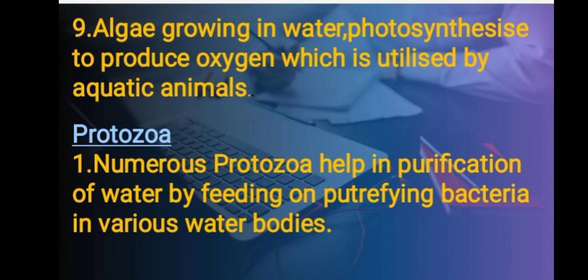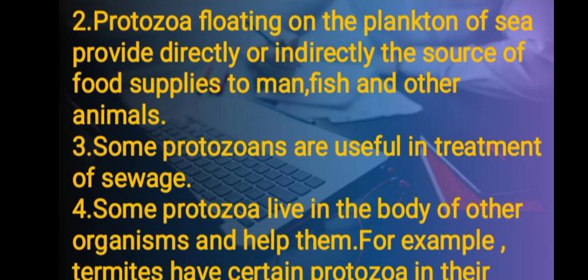Algae growing in water photosynthesize to produce oxygen, which is utilized by aquatic animals. Let's see how protozoa are helpful to us. Some protozoa help in the purification of water by feeding on putrefying bacteria in various water bodies. Protozoa floating on the plankton of seas provide, directly or indirectly, the source of food supplies to humans, fish, and other animals.